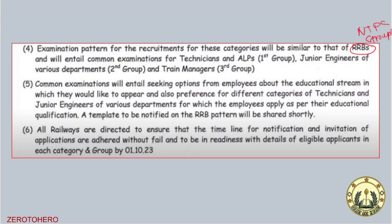For those categories, similar to RRB — that will be NTPC or Group D. Stage 1, 2, or 3 — how do you connect with that process? Technician will be covered by the ALP. Junior Engineer will require Group 2 type examination. This will require seeking option from employees about the educational stream they would like to appear for.